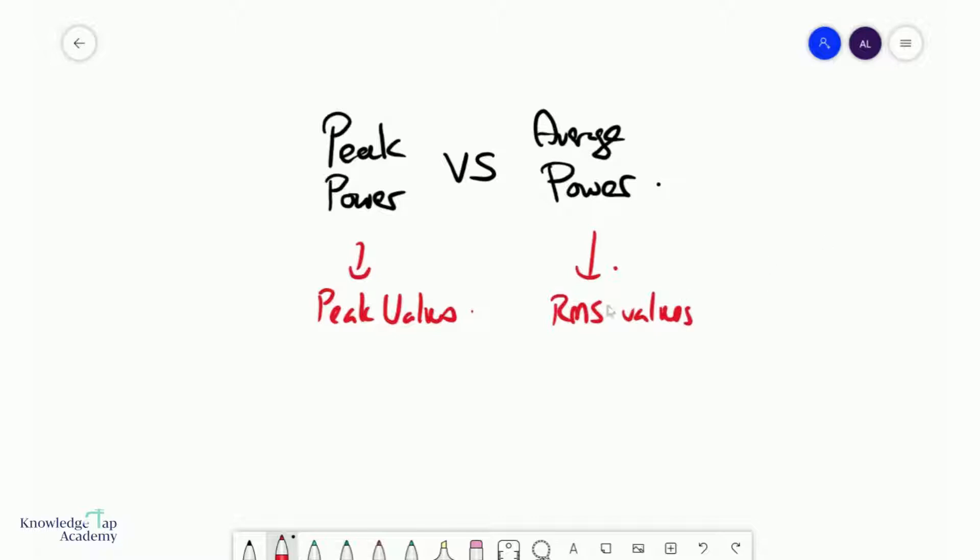What exactly do I mean by that? We know in general, P equals IV equals I squared R equals V squared over R.